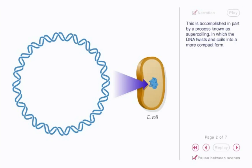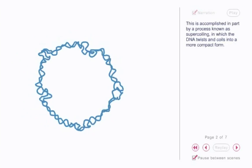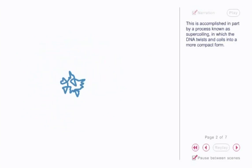This is accomplished in part by a process known as supercoiling, in which the DNA twists and coils into a more compact form.